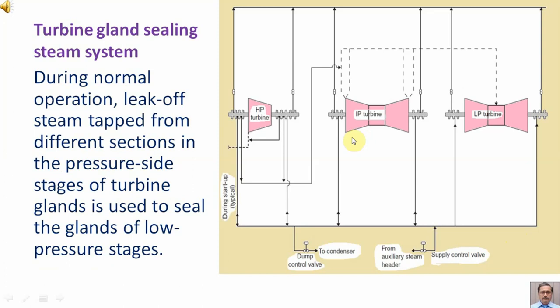During normal operation, leak-off steam tapped from different sections in the pressure side stages of turbine glands is used to seal the glands of low pressure stages.